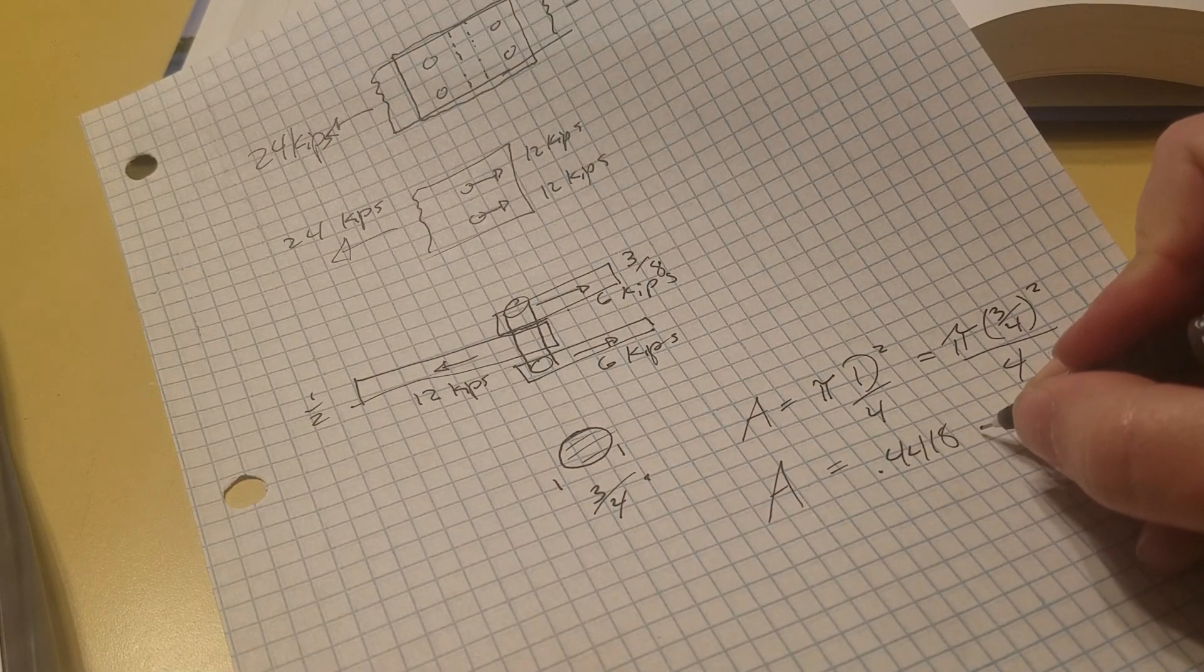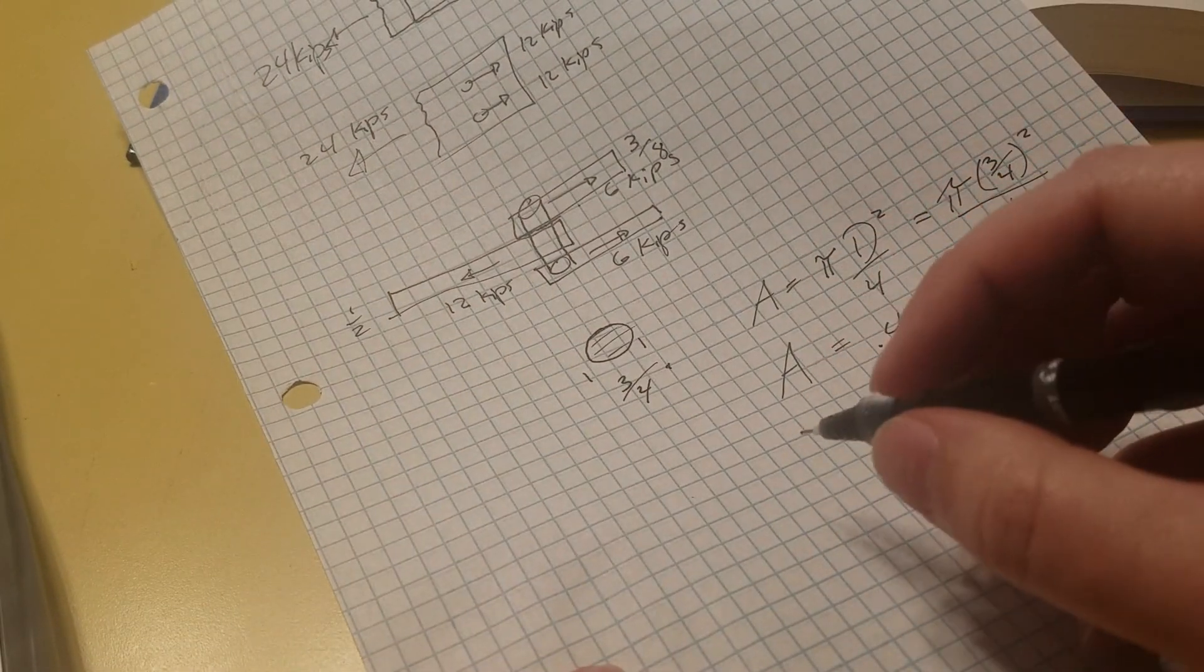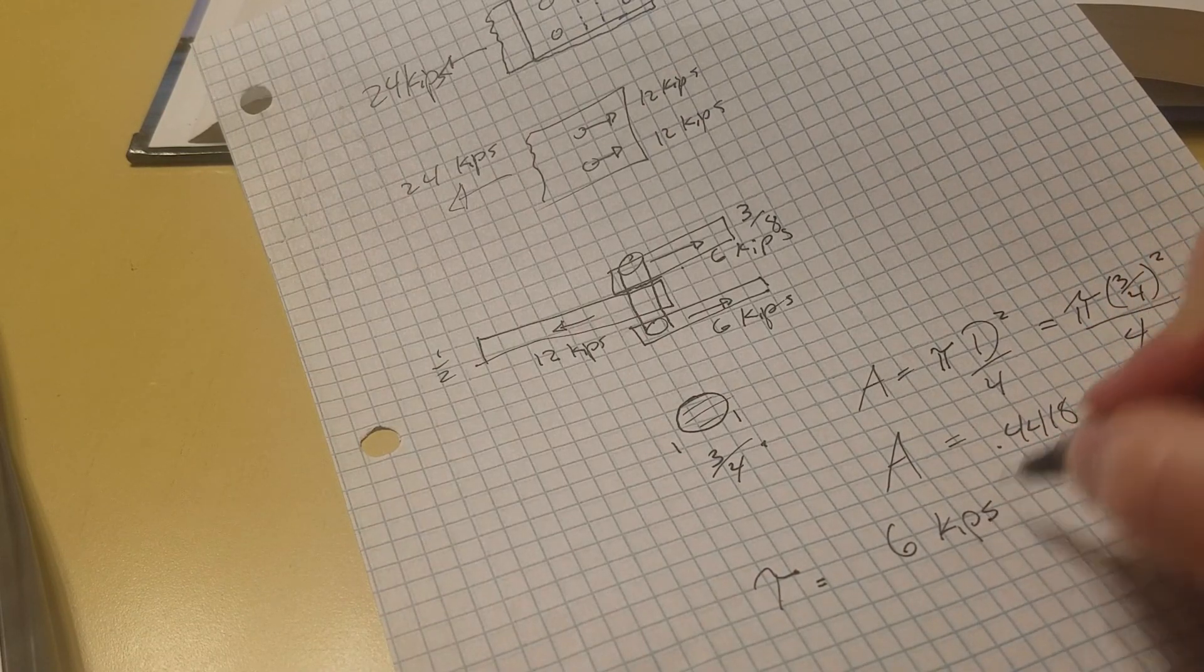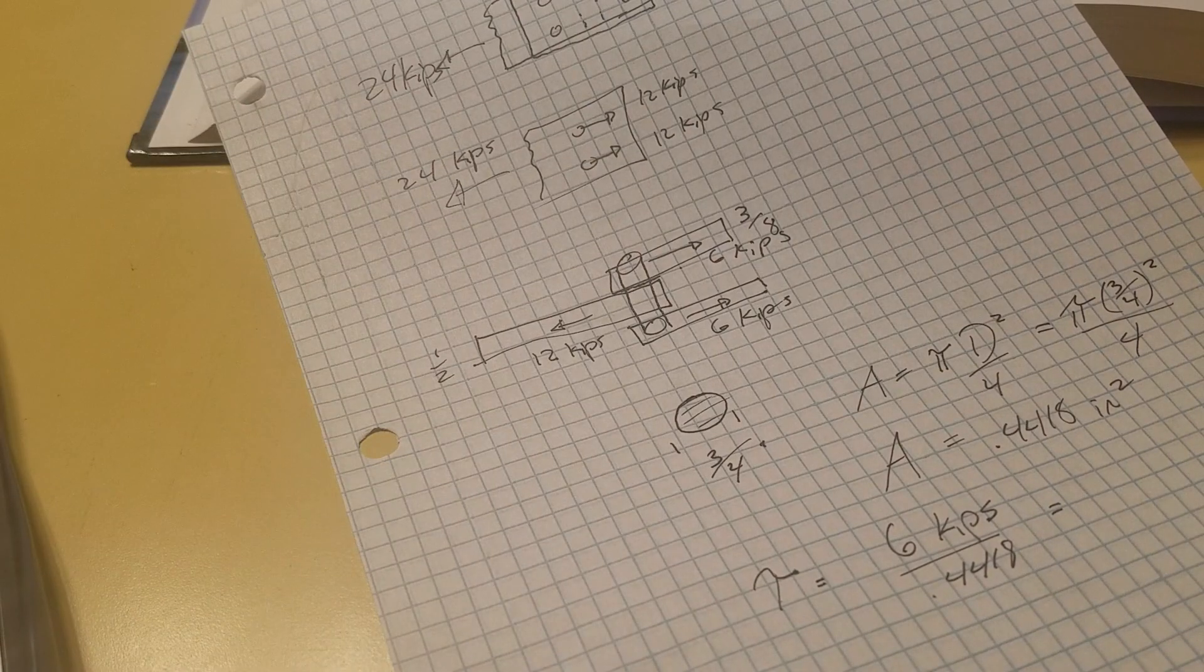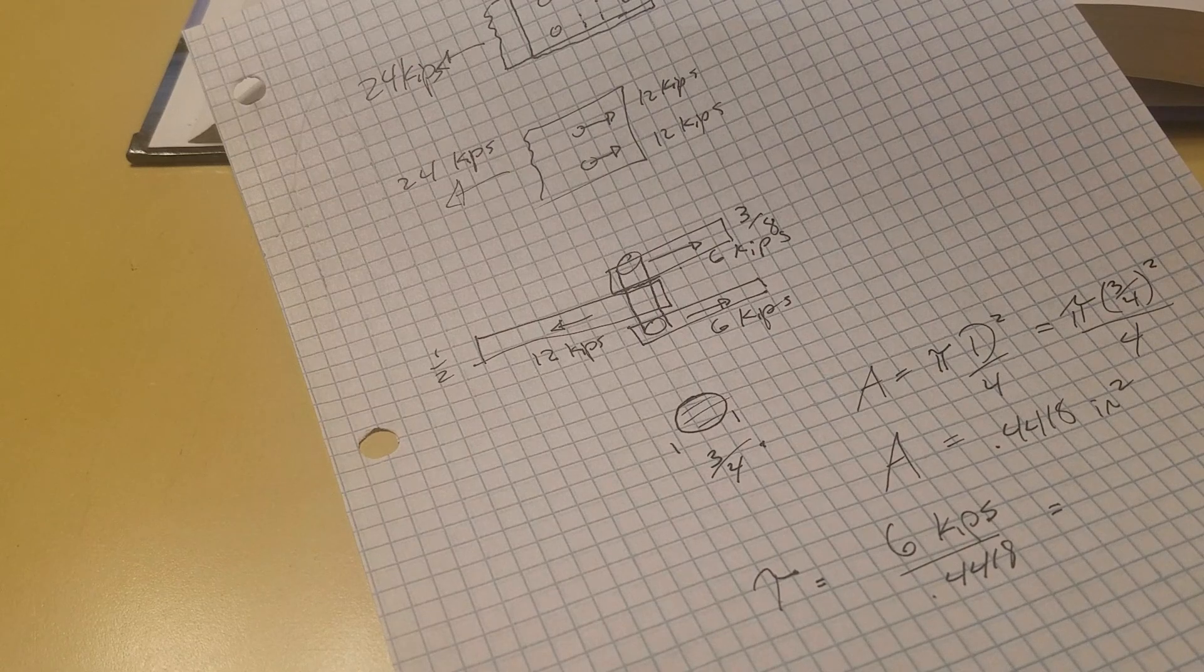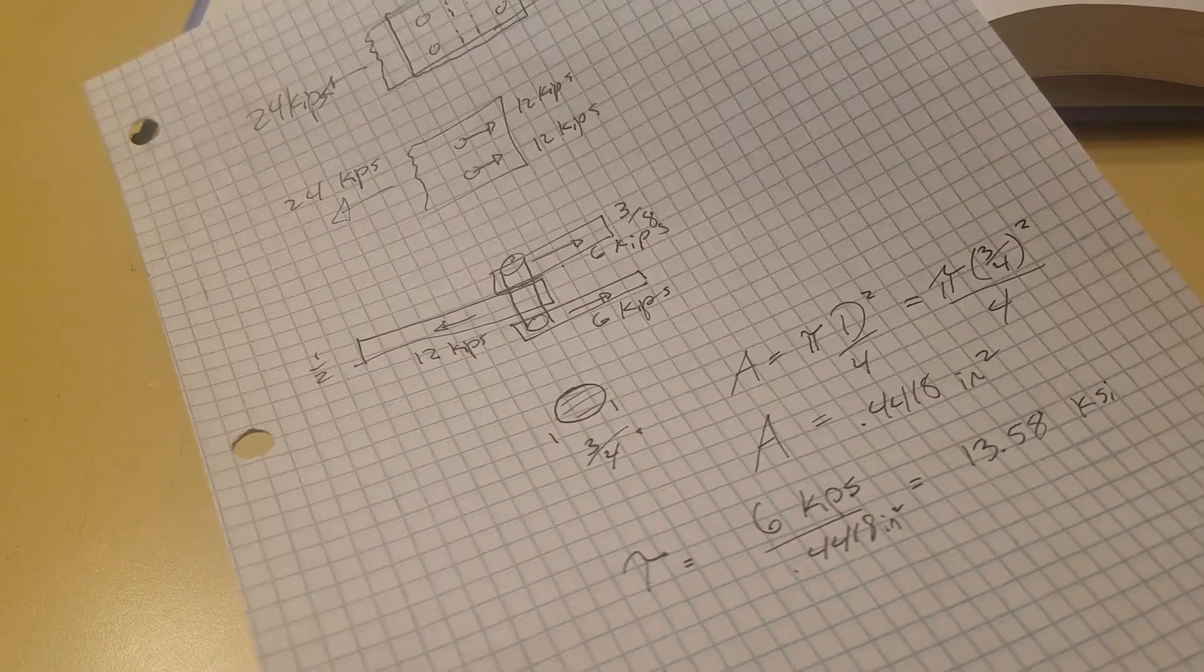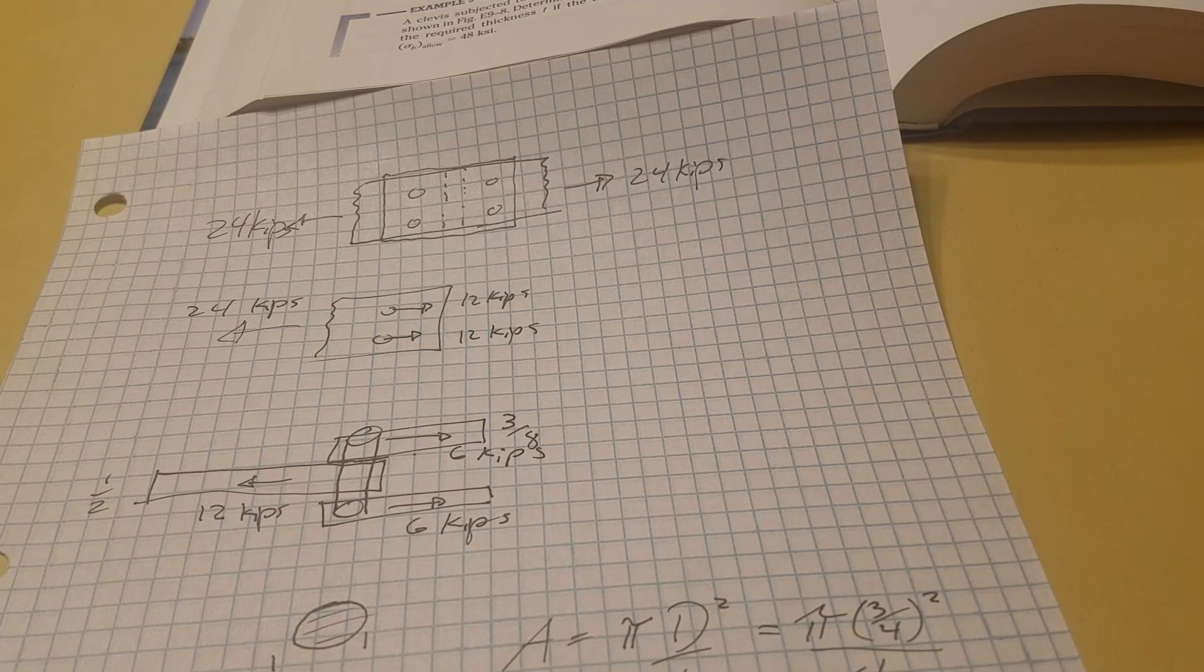Let's just round up now. Inches squared. And it's experiencing six kips shear. So got 13.58 thousand pounds per square inch and I don't want to do the bearing stress stuff. All right, thank you.